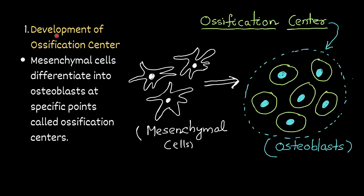Step one — development of the ossification center. Mesenchymal cells differentiate into osteoblasts at specific points called ossification centers. These mesenchymal cells differentiate into osteoblast cells — the immature bone cells. This area is called the ossification center, meaning bone formation starts from this point.